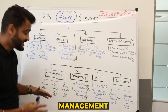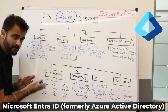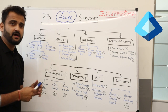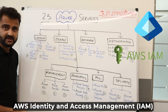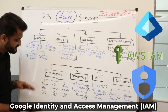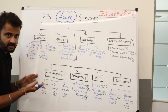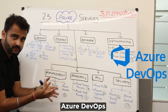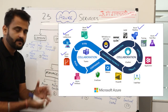Moving to the management side, we have Azure Active Directory — a very comprehensive service providing identity and access management. AWS has IAM and GCP also has IAM services; similarly Azure Active Directory provides these services to Azure customers. Azure DevOps is a suite of services providing all kinds of DevOps tools under one umbrella — a very famous service.